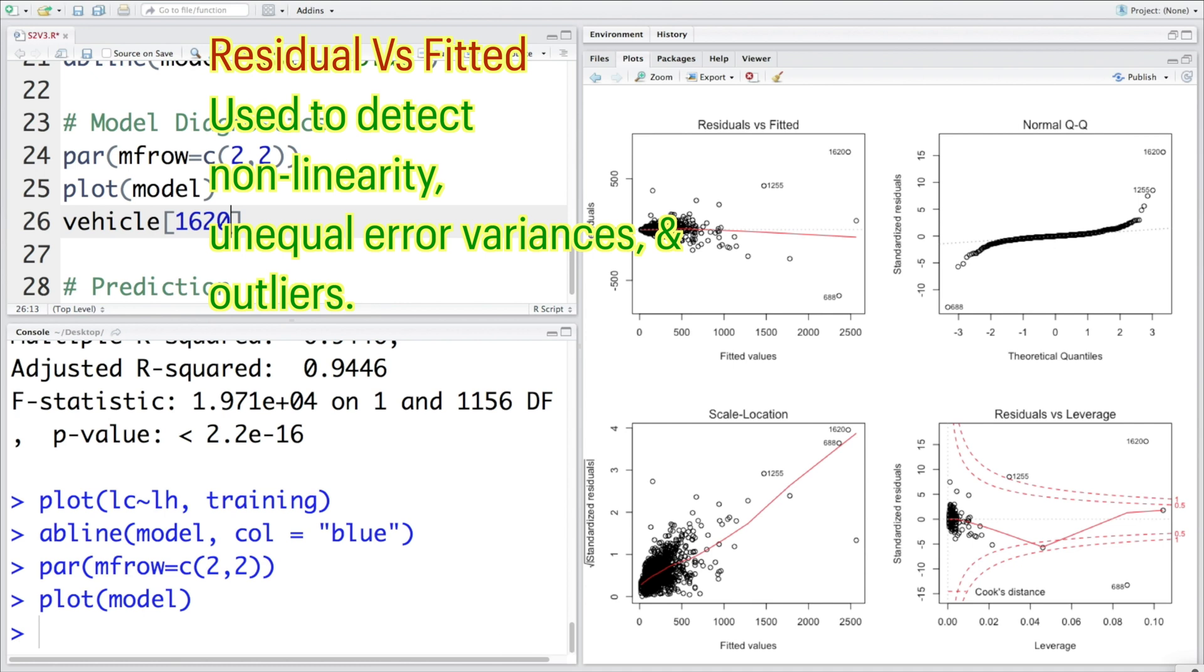Now the second important thing is that these dots should be scattered around this red line more or less evenly, forming a rectangular band. That will indicate that the variances of the error terms are more or less equal.